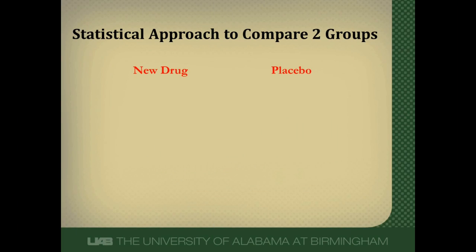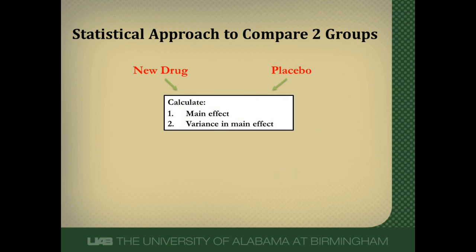There are two statistical approaches we can use to compare two groups. Let's say we're doing a study comparing a new drug to placebo — we want to see its outcomes. The first thing we do is calculate the main effect of the difference between the outcome rates in these two arms of the study and calculate the variance or variability in this main effect.